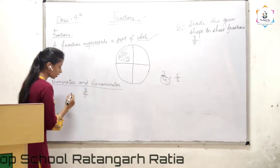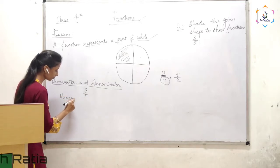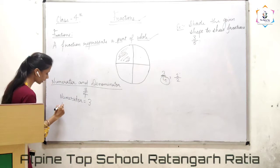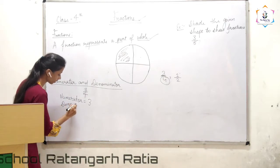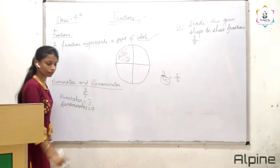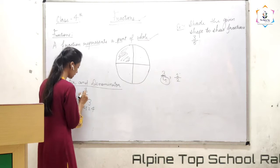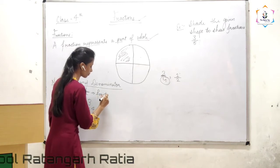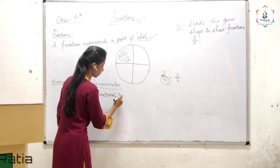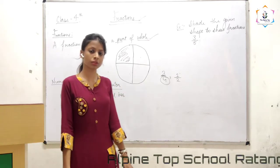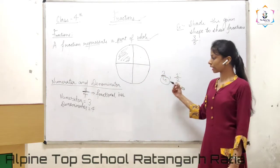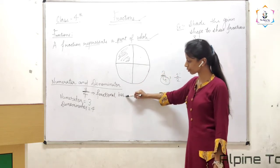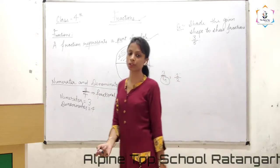Three by four. Here my numerator is 3 — the value at the upside we say a numerator. And the value at the downside, we say denominator. Now this line between them — this line we say a fractional bar. A fraction consists of two things: numerator and denominator, separated by a line which we call a fractional bar.